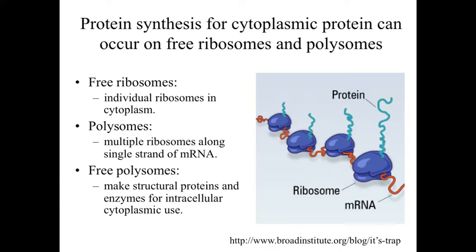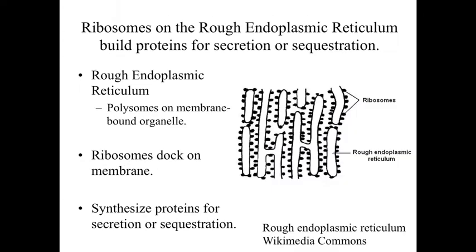These free polysomes or free ribosomes floating around within the cytoplasm are going to be making things like structural proteins or enzymes that will be used within the cytoplasm. But there are going to be many times when we need to build a protein associated with a membrane, or proteins that need to be separated from the rest of the cell — sequestered in some way. There may be digestive enzymes for use within the cell, or things that are going to be released from the cell. So what we have is the rough endoplasmic reticulum, which is a membrane-bound structure that has a rough appearance because it has ribosomes or polysomes associated with it.